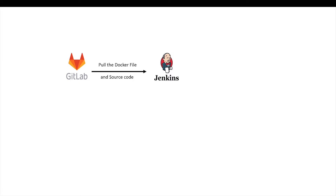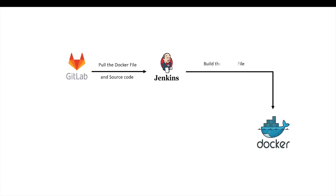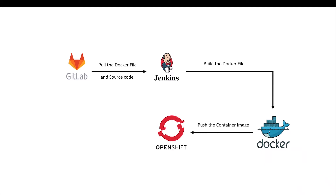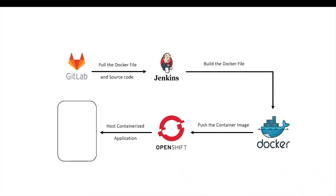Let's explore the workflow of Java application deployment stage by stage. The Jenkins job will pull the Java application source code, OpenShift deployment YAML, and Dockerfile from GitLab. In the next stage, Jenkins will build the Docker image using the Dockerfile. In the next stage, Docker will push the container image to the OpenShift registry. In the final stage, Jenkins will deploy the containerized Java application on OpenShift using the OpenShift deployment YAML.